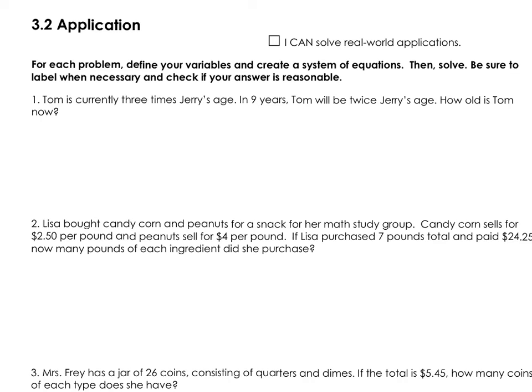Question 1: Tom is currently three times Jerry's age. In 9 years, Tom will be twice Jerry's age. How old is Tom now? We're going to first assign variables. We have two people as part of this, Tom and Jerry. So let's let x equal Tom's age. Then in comparison, y would represent Jerry's age.